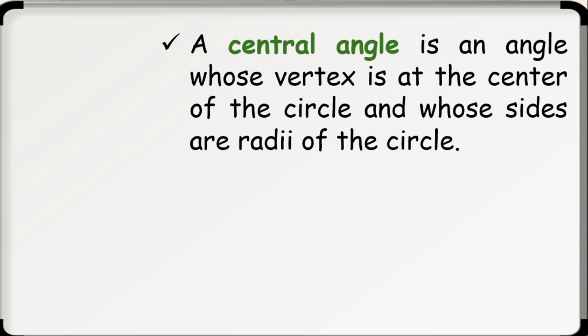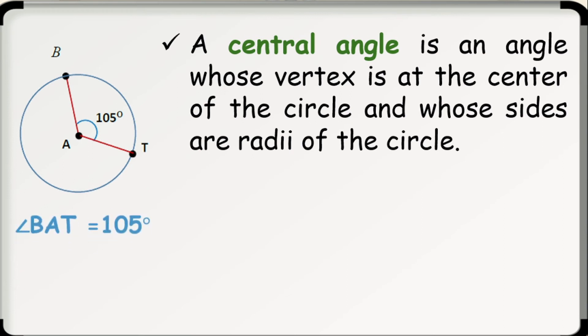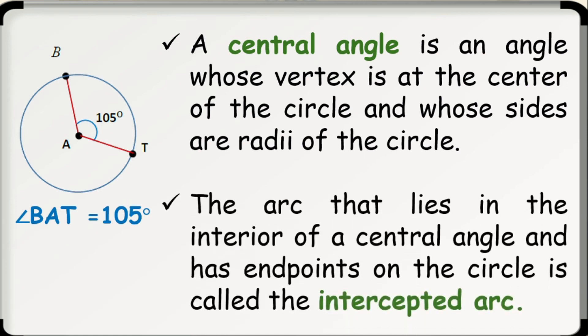An arc is associated with the measure in degrees of its corresponding central angle and inscribed angle. A central angle is an angle whose vertex is at the center of the circle and whose sides are the radii of the circle. In the figure, angle BAT is a central angle whose measure is 105 degrees. The arc that lies in the interior of a central angle and has endpoints on the circle is called the intercepted arc. So arc BT is the intercepted arc of angle BAT, and the measure of a central angle is equal to the measure of its intercepted arc. Hence, arc BT is also equal to 105 degrees.